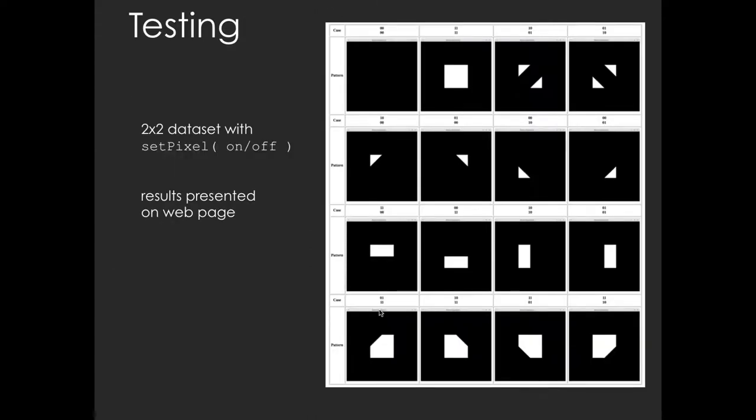For this portion of the assignment, the students were asked to generate the lookup table by hand. For testing, they were asked to demonstrate that the table is correct by running the program for all cases using a 2x2 dataset and turning on-off the respective vertices.